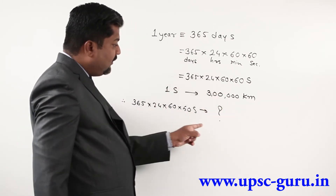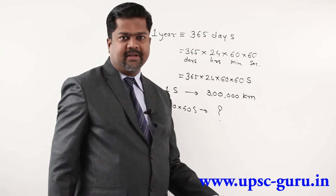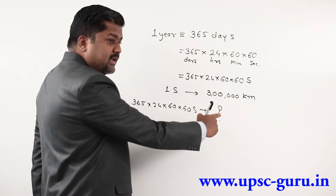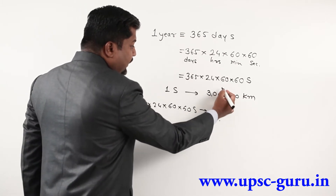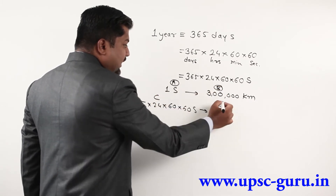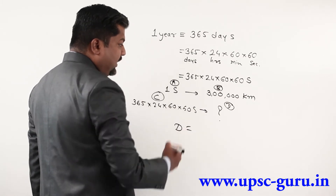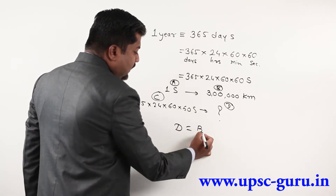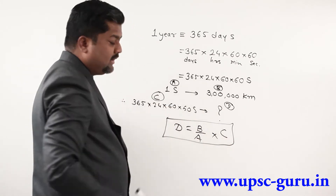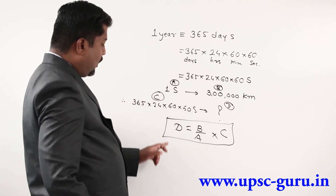This system I am showing here is very useful in further parts of our mathematics. In one second, light travels this much distance. So the distance D equals B divided by A, multiplied by C. Try to remember this formula and act accordingly. So D equals the distance traveled, that is B — which is 3,000,000,000,000,000 — into the total seconds, that is 365 × 24 × 60 × 60.